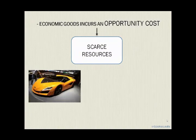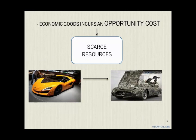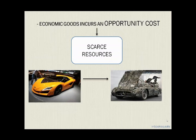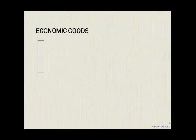Let me explain with an example. This is an advanced car painted in yellow. The car is made up of metal parts. Metal has various usages apart from only producing a car, so at this moment the next best alternative use of metal is sacrificed for the production of this car. This proves that economic goods incur an opportunity cost.